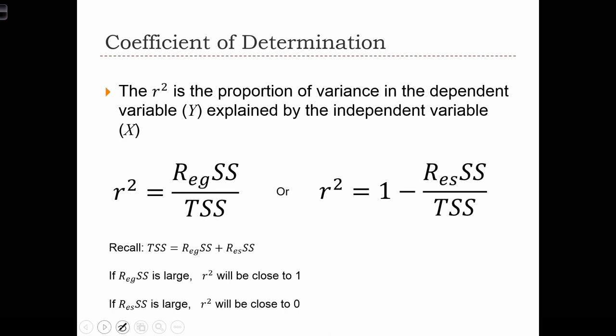This slide shows us how we actually formulate the r-squared statistic from the regression sum of squares and the total sum of squares. Remember that r-squared is the proportion of variance in the dependent variable Y that is explained by the model, or that's explained by the independent variable X. In other words, we can make a ratio.